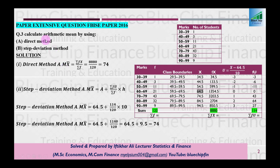Ab pehla jo poocha gaya: arithmetic mean direct method. Yeh barabar hai sum of fx divided by sum of f, kyunki grouped data hai. Sab se pehle hum nikalenge x yani class mark. Class mark simple hai: dono class boundaries ko add karke 2 par divide karein. 29.5 + 39.5 divided by 2 = 34.5, phir 39.5 + 49.5 divided by 2 = 44.5, aur isi tarah aage.